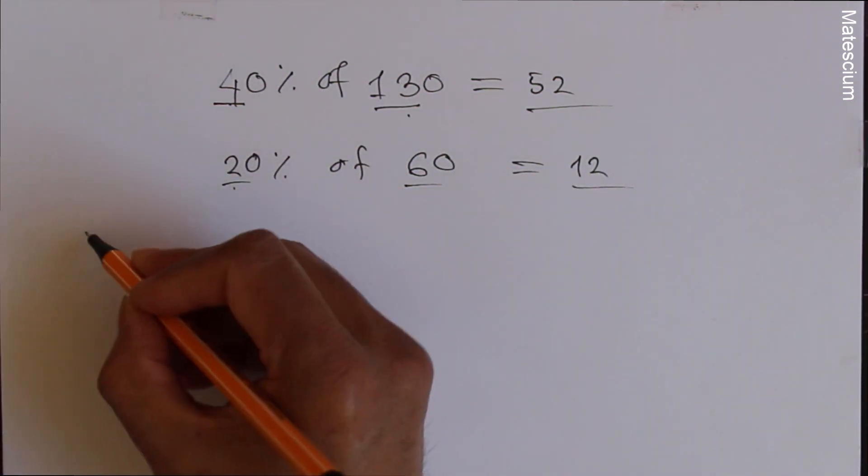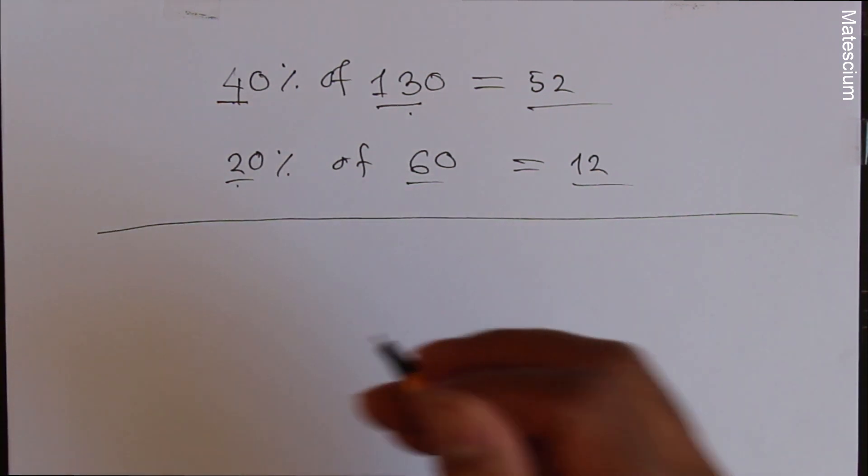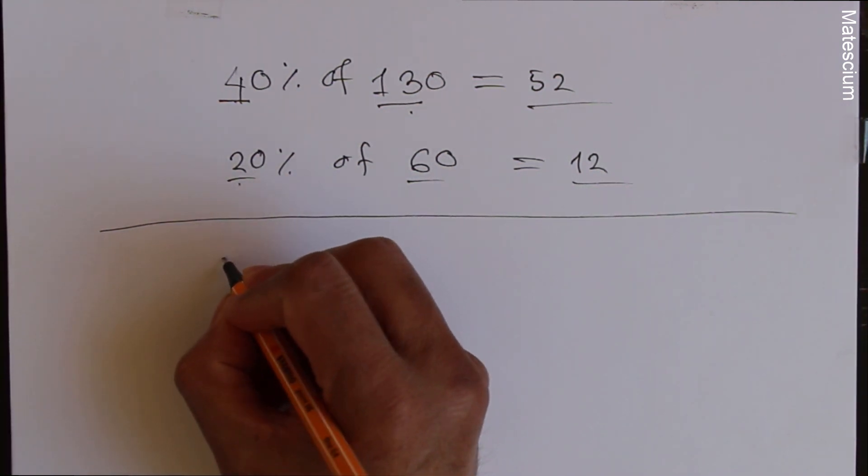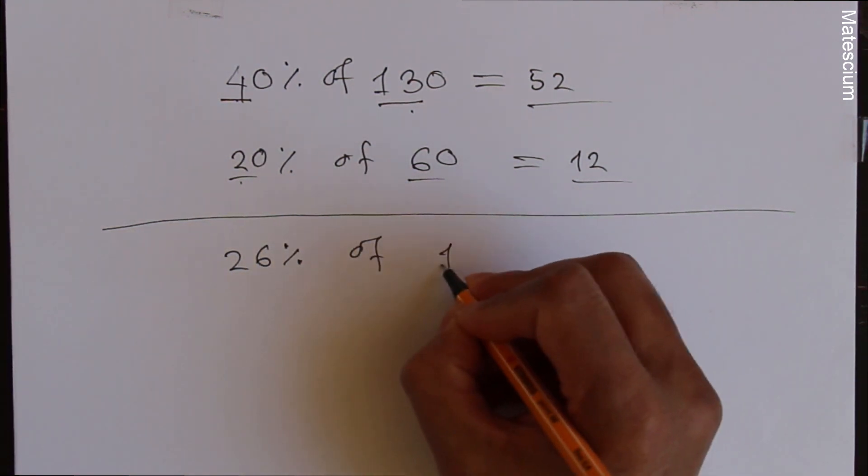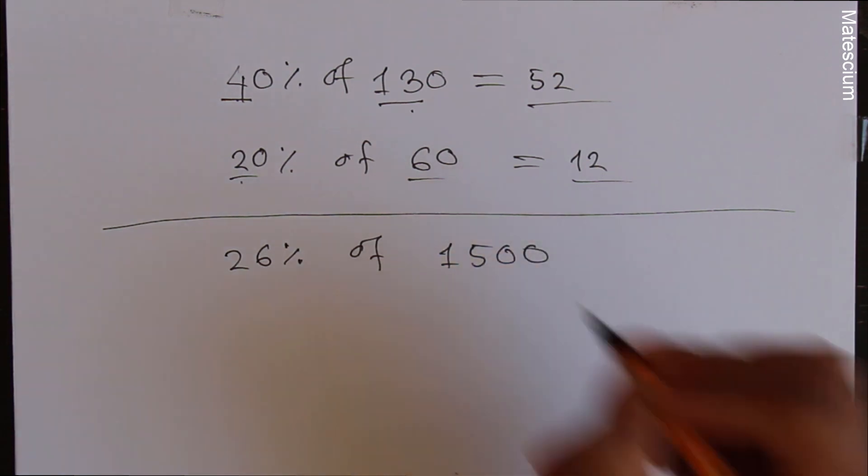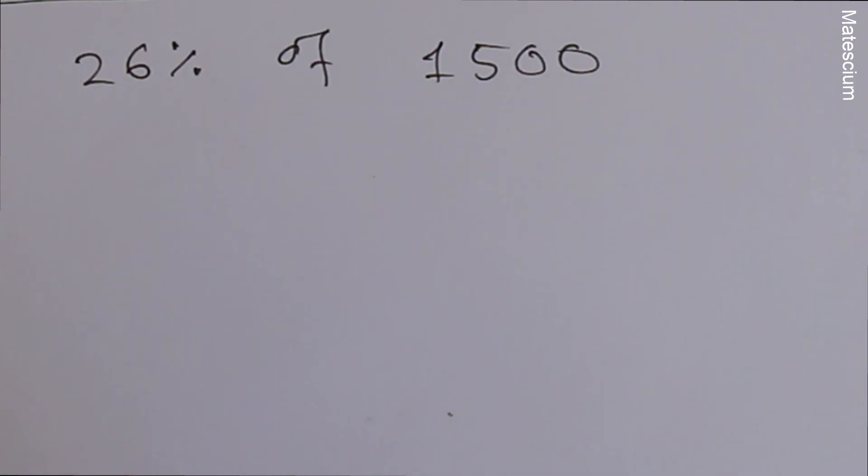Well, those are very simple problems. Let's take some larger numbers. Let us consider, let's say 26% of 1500. To do that, I discovered an ATP triangle formula. I called it ATP triangle formula.